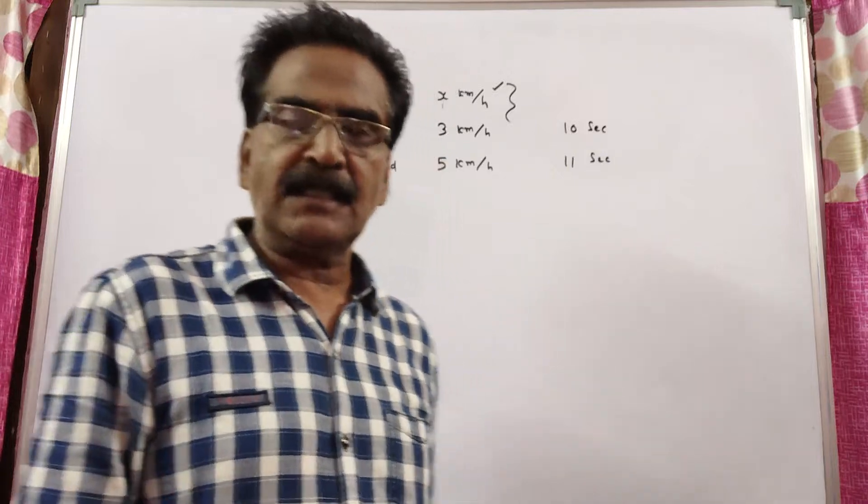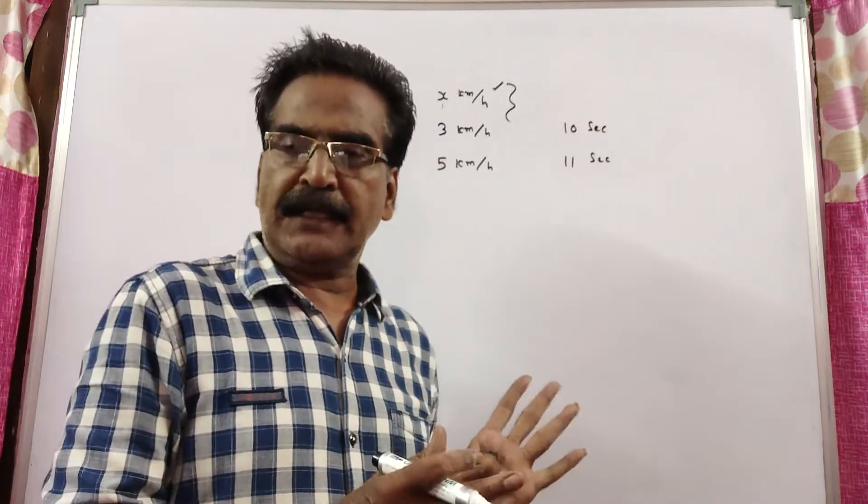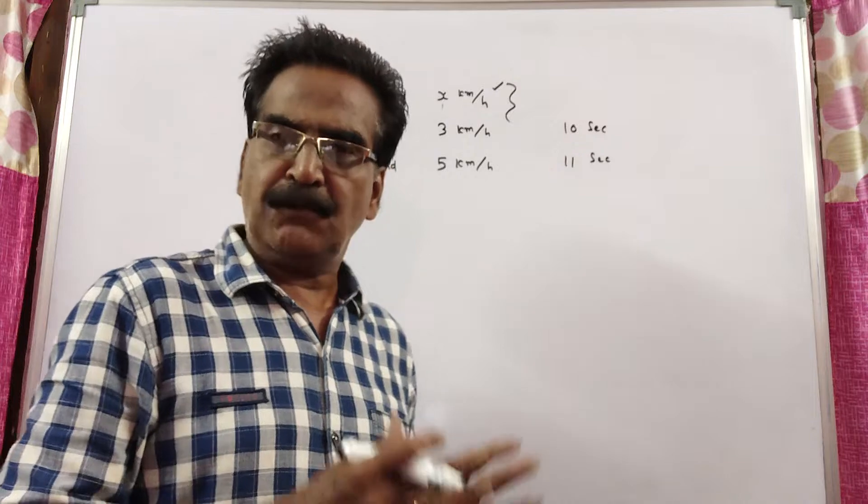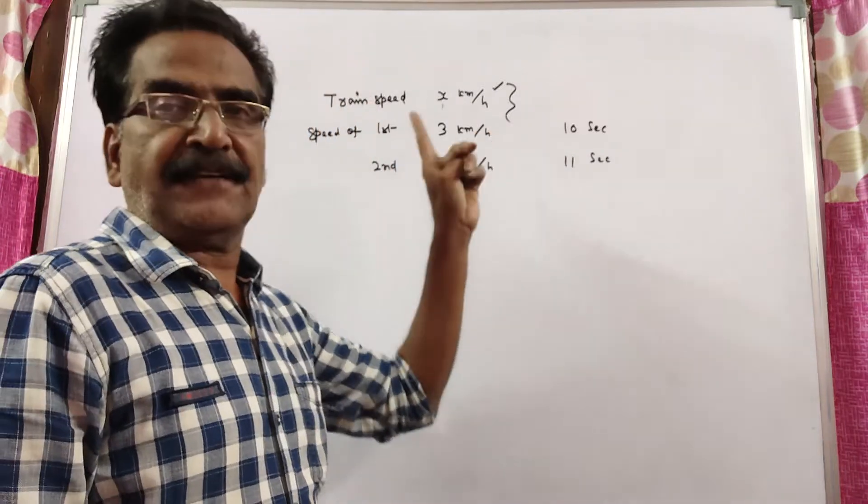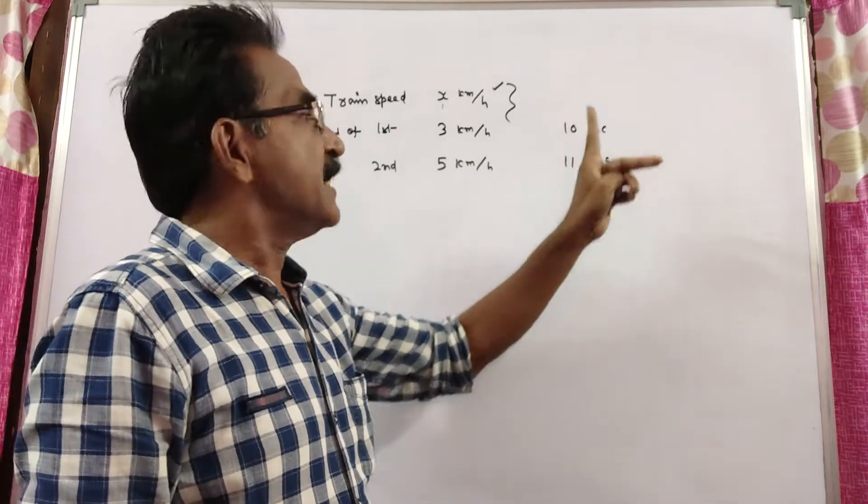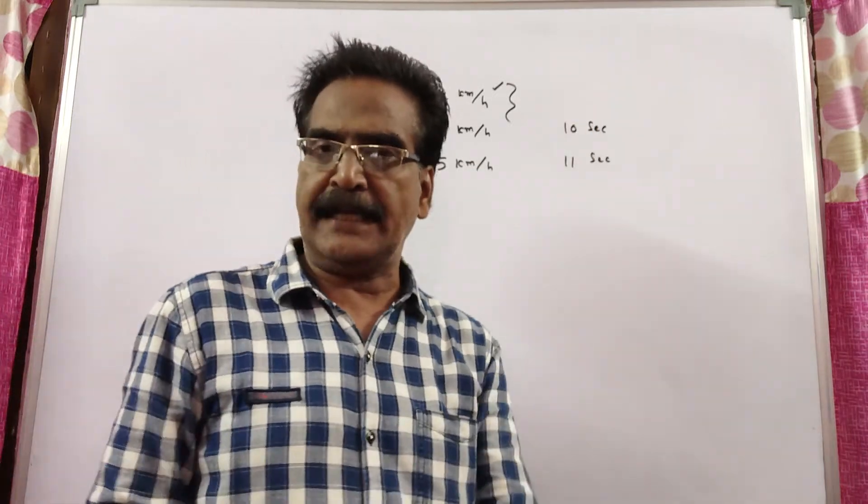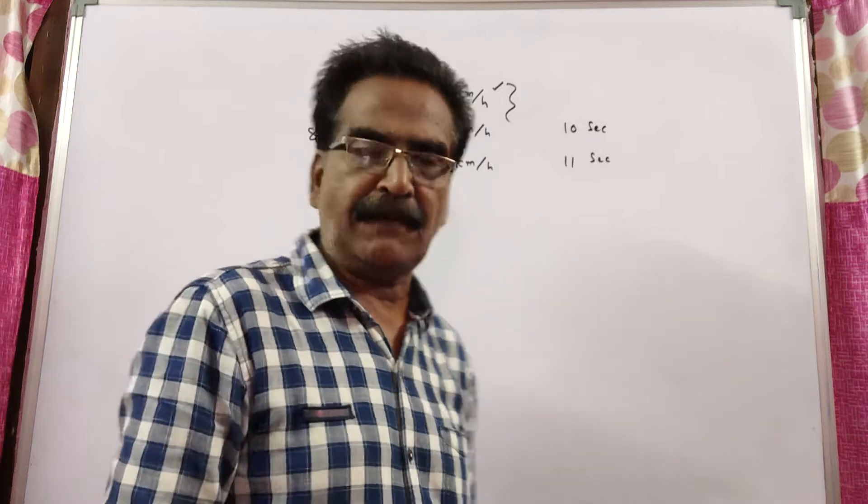The problem is given in the description box. A train overtakes 2 persons moving in the same direction of the train with 3 kmph and 5 kmph speeds in 10 seconds and 11 seconds respectively. Here the question is, what is the speed of the train?